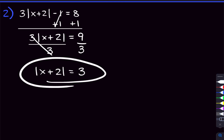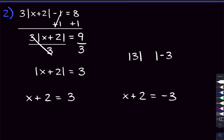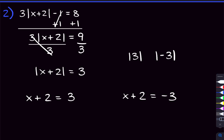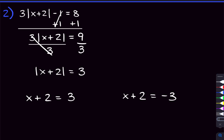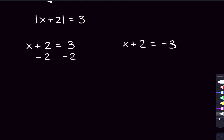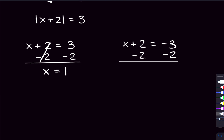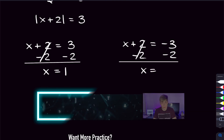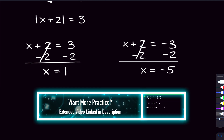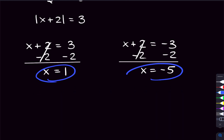Now the absolute value is isolated, and x plus 2 inside it could either be 3 or negative 3, because the absolute value of both 3 and negative 3 equals 3. So we set up two equations. For both, we subtract 2 on both sides. The left equation gives x equals 1. The right equation gives x equals negative 3 minus 2, which is negative 5. Those are our two solutions.